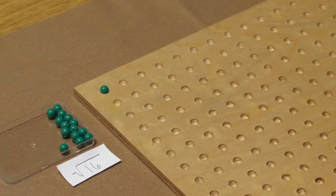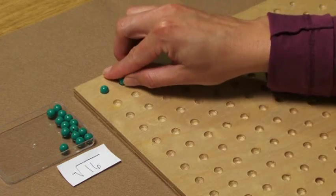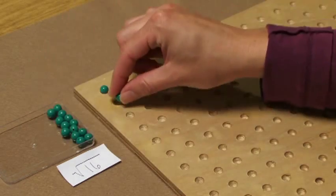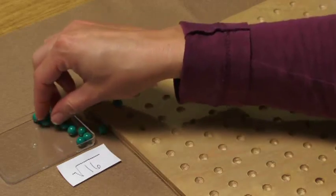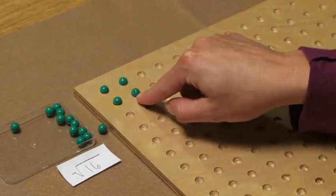Here we have our one square. Then I'm going to put one bead out, one bead down, and then I'll need to fill in. This creates our two square.